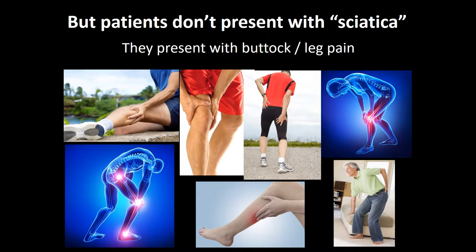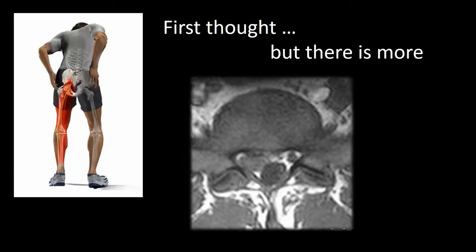However, our patients do not present with sciatica but rather variations of buttock and leg pain, and a much wider differential should be held. When a patient presents with buttock and leg pain, our first thought is that of a sequestrated paracentral disc, such as indicated on the MRI scan here.